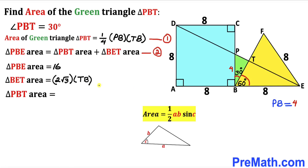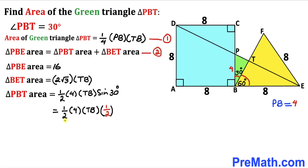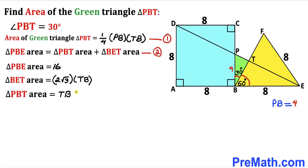Now let's calculate the area of the green shaded triangle PBT. Using Area = ½ · A · B · sin(C), our side lengths are PB = 4 and TB, and the angle between them is 30 degrees. So the area = ½ · 4 · TB · sin(30°) = ½ · 4 · TB · ½. Simplifying the right-hand side gives simply TB. So the area of triangle PBT equals TB.